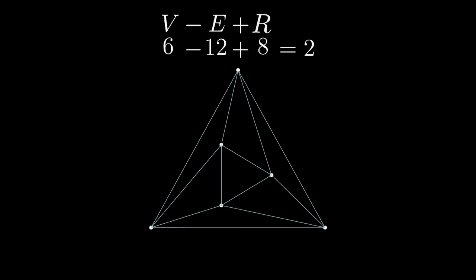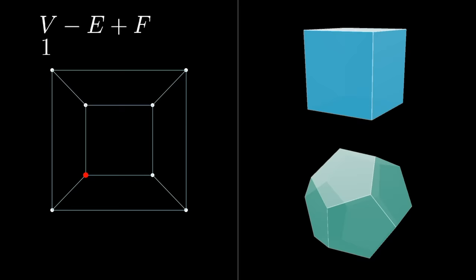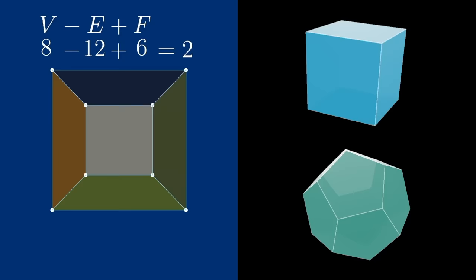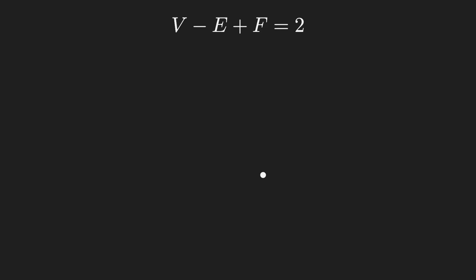More commonly you would see this written as V minus E plus F is equal to 2, since originally the equation described the vertices, edges, and faces of three-dimensional polyhedra. And if you want to know why this magical fact is true, you can think about building up your graph from a trivial case, where you have a single node and no edges. So V would be equal to 1, F would also be equal to 1 because of that infinite outer region, and E is 0, so the equation is obviously true.